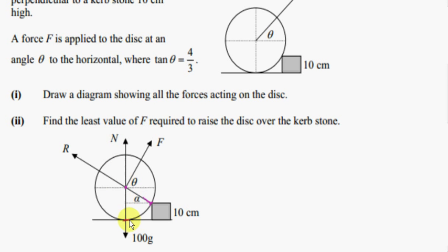N is at right angles to the surface of contact. If we draw a line at right angles to the curve on the circle, that line passes through the center of the circle. You can also see this from the fact that the ground is tangential to the circle — if we draw a line from the center to the point of contact of the tangent, that line is perpendicular to the tangent. So the normal force is perpendicular to the circle at this point. Let's suppose the disc is in equilibrium, so it hasn't moved over the kerb stone yet.